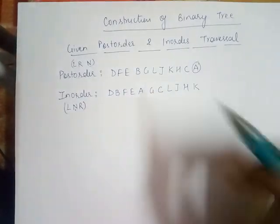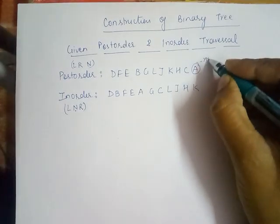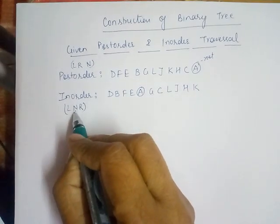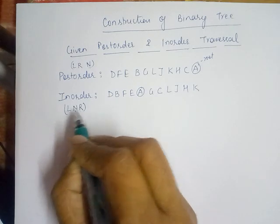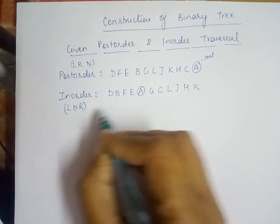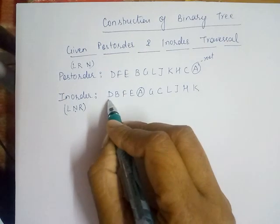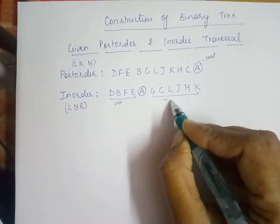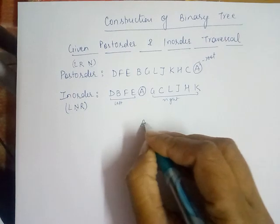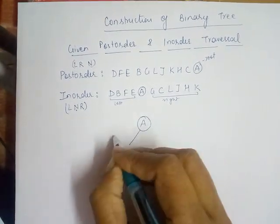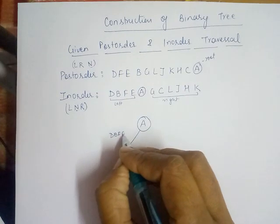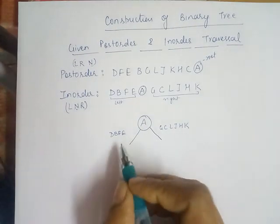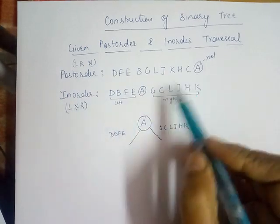In this postorder sequence, the last letter always becomes the root node, so 'a' becomes the root node. In the inorder sequence, the left part of 'a' — that is 'dbfe' — becomes the left child of 'a', and the right part — 'gcljhk' — becomes the right child of 'a'.